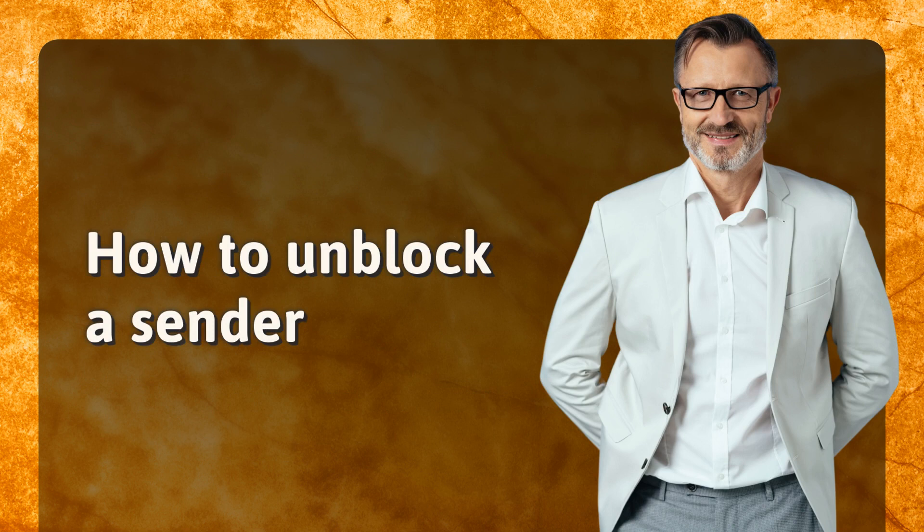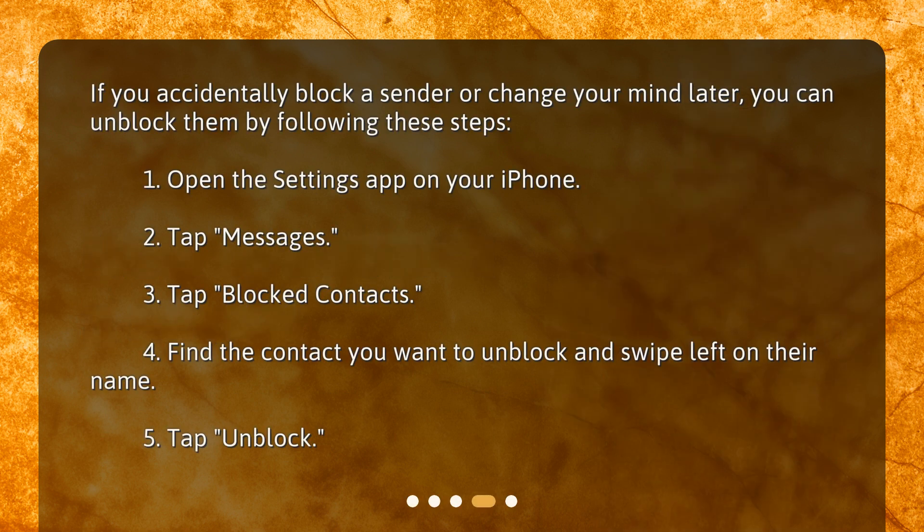How to Unblock a Sender. If you accidentally block a sender or change your mind later, you can unblock them by following these steps. 1. Open the Settings app on your iPhone. 2. Tap Messages. 3. Tap Blocked Contacts. 4. Find the contact you want to unblock and swipe left on their name. 5. Tap Unblock.